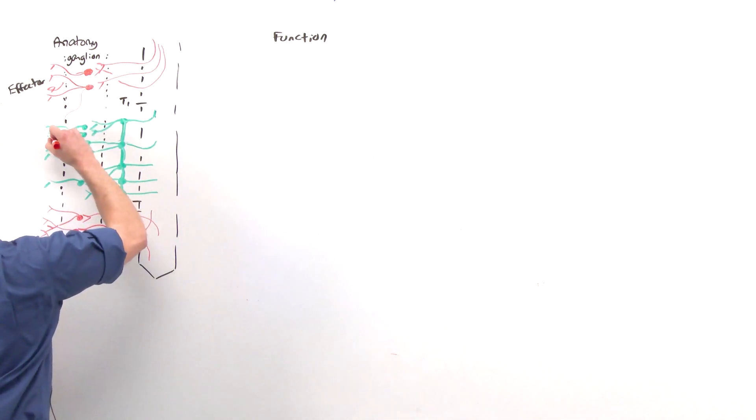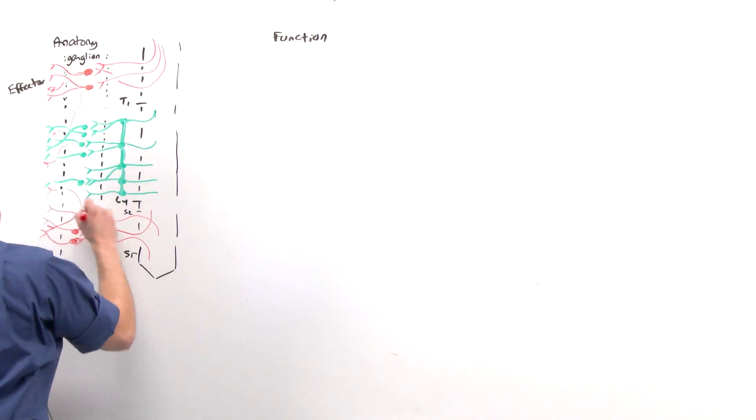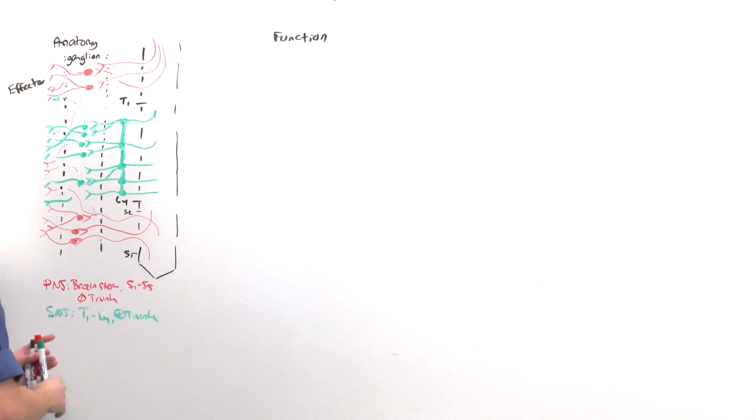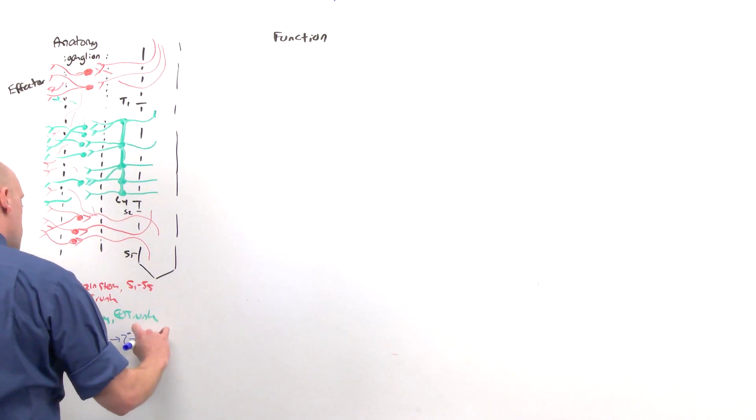And these effector organs are, of course, going to cross over so that there's parasympathetic nervous intervention to all organs as well as sympathetic stimulation to all organs. The point is that, anatomically, the parasympathetic nervous system comes from the brainstem and the end of the spinal cord, and it has no trunk. Whereas, the sympathetic nervous system arises from T1 through L4, does have a trunk. And the similarities between them is that there is the first degree neurons which come from the central nervous system that then find a ganglion in which they synapse onto the second order neurons, which then go have their effect on the effector organ.